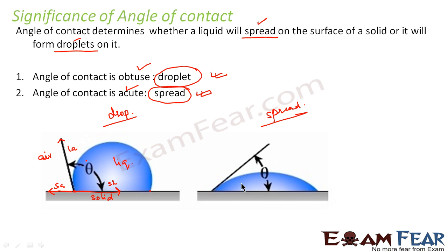Similarly, in the case of a spread, the water just spreads over the solid surface with no droplet formed. Here also we identify the solid-liquid interface, the solid-air interface, and the liquid-air interface. The angle which the liquid-air interface forms with the solid surface is an acute angle — less than 90 degrees. So: whenever the angle of contact is less than 90 degrees, the fluid spreads on the solid surface; when it is greater than 90 degrees, the fluid forms a droplet.